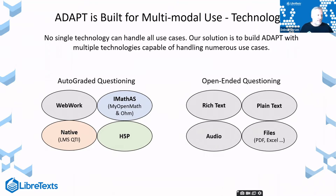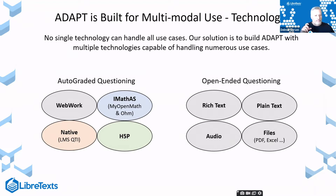We have infrastructure to facilitate open-ended questioning and open-ended grading that can handle rich text, plain text, audio submissions — useful for foreign languages or music — or file uploads like PDFs, drawings, Excel files, or even Jupyter notebook instances. For auto-graded technology, instead of pushing one specific technology far beyond its scope, our approach is to take multiple technologies and use each for what it's well suited for.